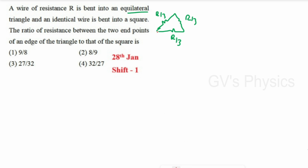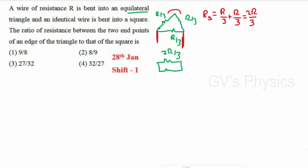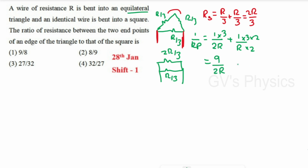For the triangle: 1/Rp = 3/(2R) + 3/R = 3/(2R) + 6/(2R) = 9/(2R), so R_triangle = 2R/9. For the square: each side is R/4. Three sides in series give 3R/4, and this is in parallel with R/4. 1/Rp = 4/(3R) + 4/R = 4/(3R) + 12/(3R) = 16/(3R), so R_square = 3R/16.